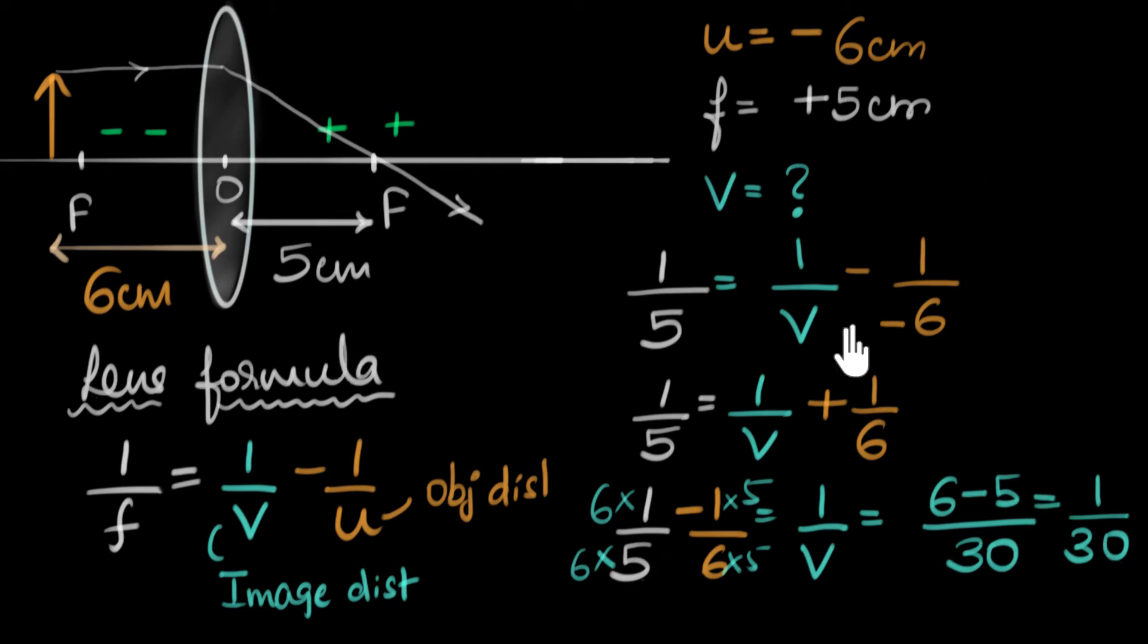And so, there we have it. So, one over v is one over 30. Which means v is the reciprocal of this. And that is 30 centimeters.